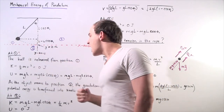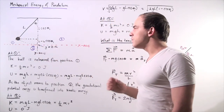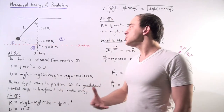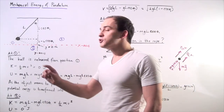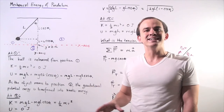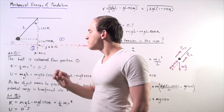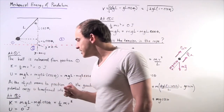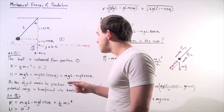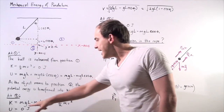As we release the object, it moves from position one to position two. As it moves, its gravitational potential energy begins to transform into kinetic energy — the energy of motion. When the object reaches the origin, position two, its gravitational potential energy is zero, having entirely transformed into kinetic energy. So at position two, the object has maximum velocity.